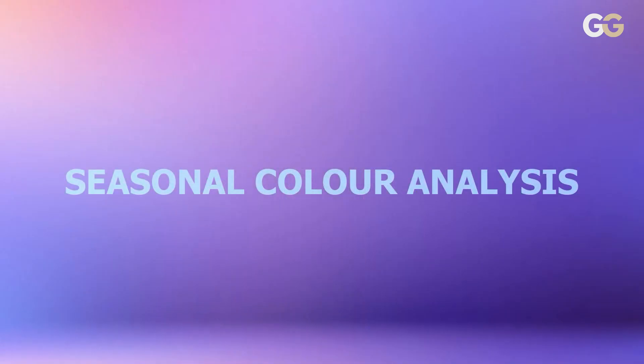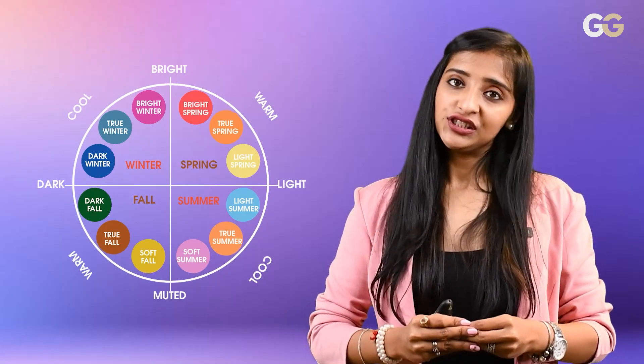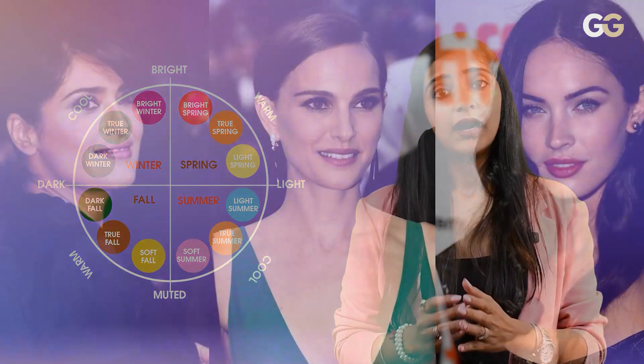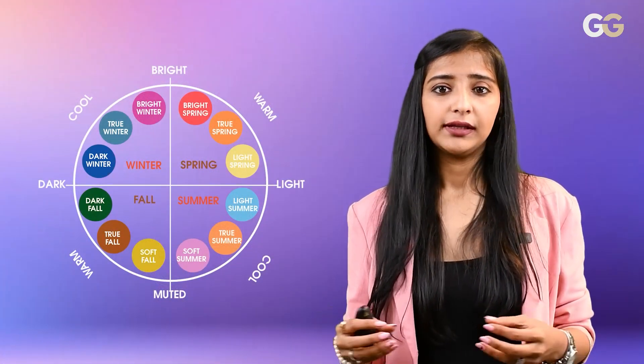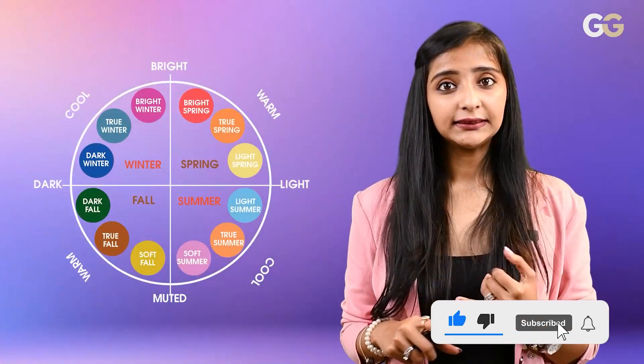Now let's look at seasonal color analysis. As you can see in the chart, it is divided into 4 seasons: Winter, Spring, Summer, and Fall — each with different color palettes. If you are bright, cool-toned, and dark, then you have a winter palette — bright winter, true winter, or dark winter types. If you are spring, you are bright, warm, and light. If you are summer, then summer is light, cool, and muted — soft summer or true summer, also called light summer. If you are fall season, then fall is dark, warm, and muted.